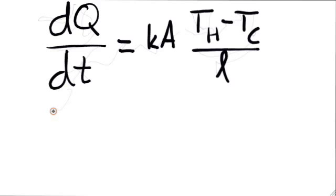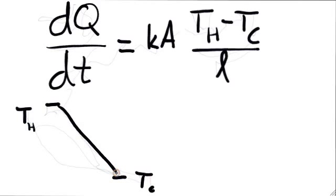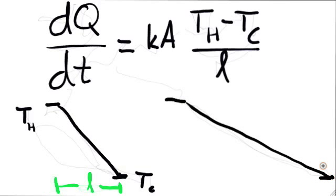Another useful analogy for developing intuition, besides the water flowing through a pipe, is an object sliding down a ramp. The difference in temperatures corresponds to the height of the ramp, and the length of the rod corresponds to the length of the base of the ramp. A steeper ramp is easier to slide down. Finally, the cross-sectional area is like the size of the object which is sliding.